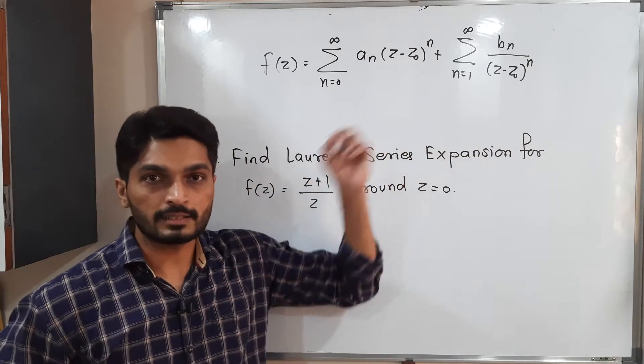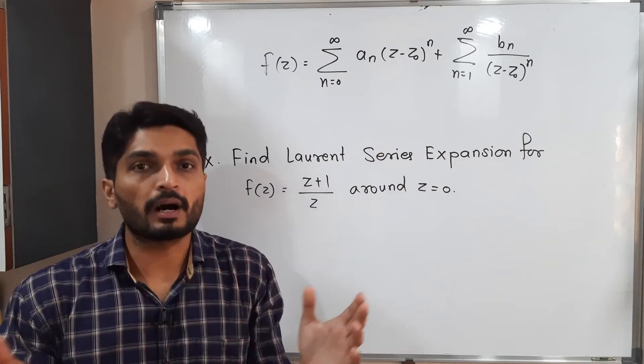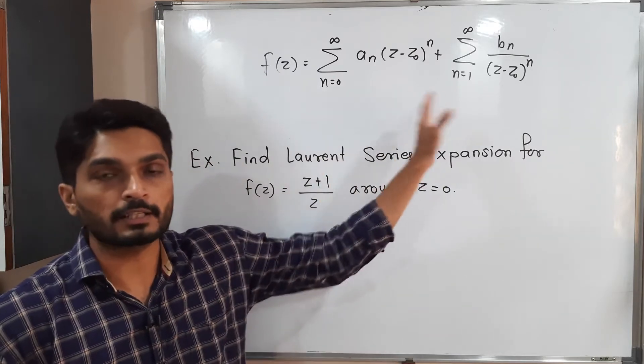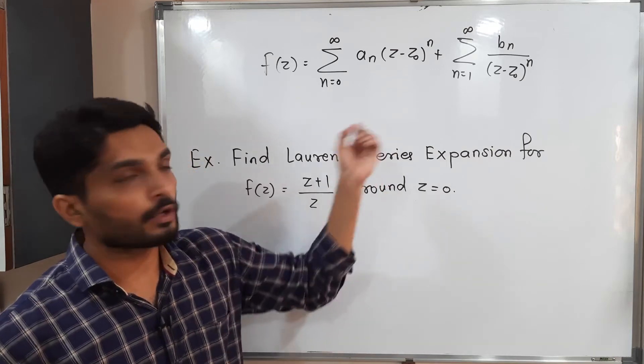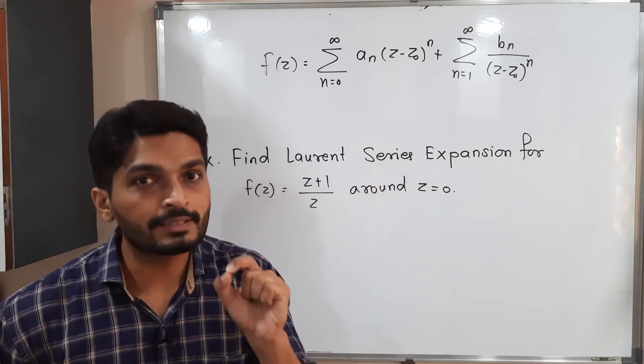Every Laurent series about z0 has two parts. First one is called analytic part, second one is called principal part. This is a Laurent series around a point z0.